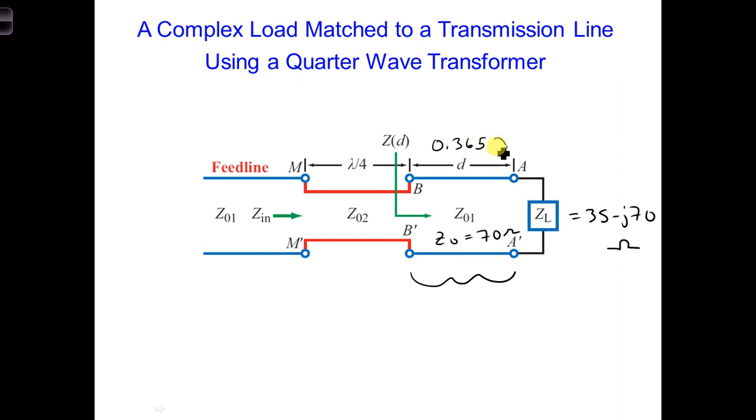Then we can connect that to a section of transmission line that is a quarter wavelength long and has a characteristic impedance of 34.3 ohms.